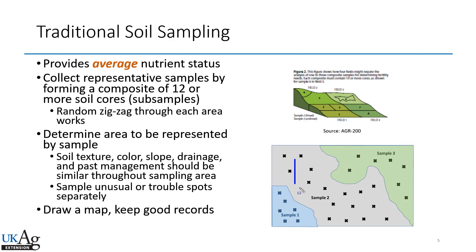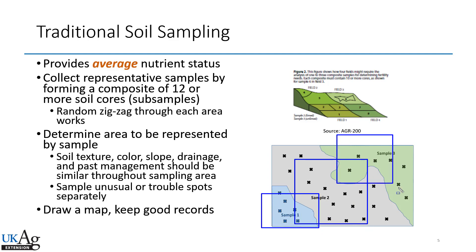Looking at this example in the lower left corner, we broke that field up into basically three different samples. Those areas could represent differences in soil texture, soil color, slope, or drainage. It might be past management — maybe there's a tobacco patch or an animal holding area you know about. You would sample those separately because they're going to be different.